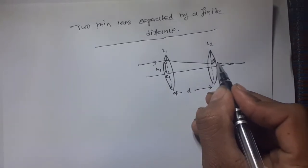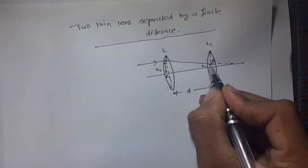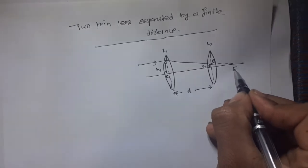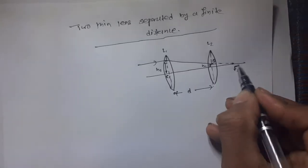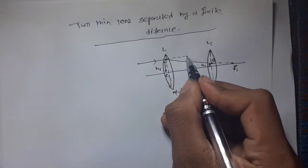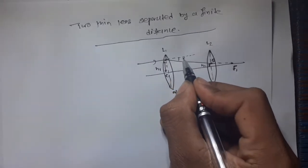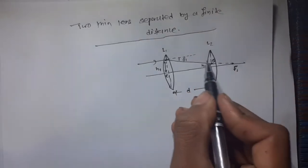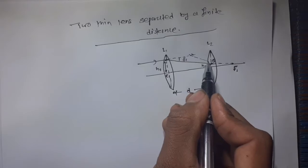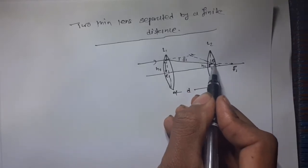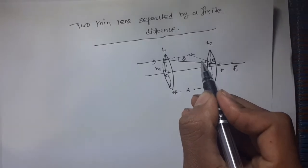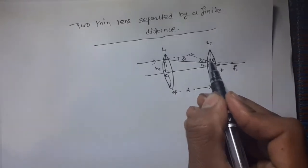Point B is at height h2 from the axis. f1 is the focal length and the angle of deviation in the first lens is del1, and the angle of deviation at the second lens is del2.